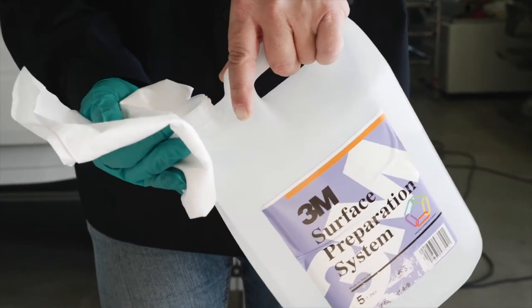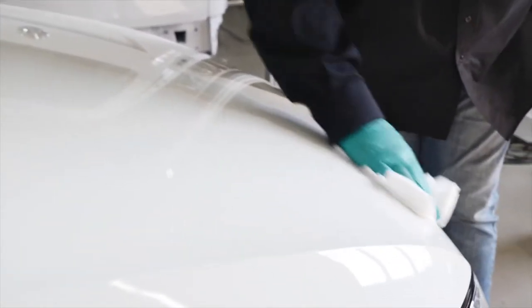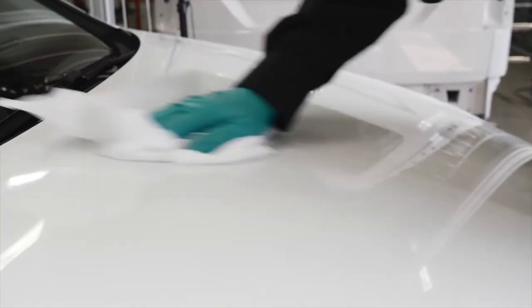Use 3M's surface preparation system to clean the surface. Pour a small amount onto a lint-free cloth and wipe smoothly across the bonnet. Once cleaned, use a dry lint-free cloth to thoroughly dry the surface, making sure all solvents are removed.